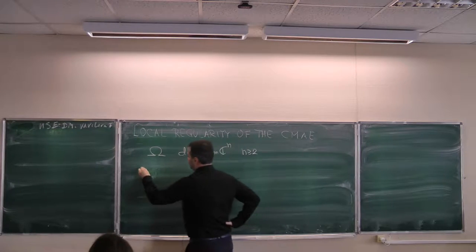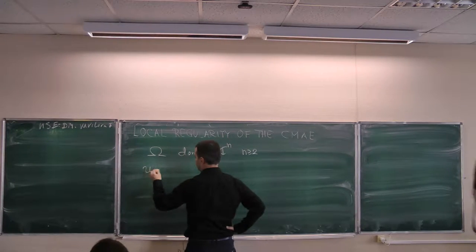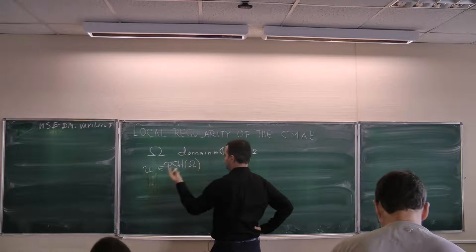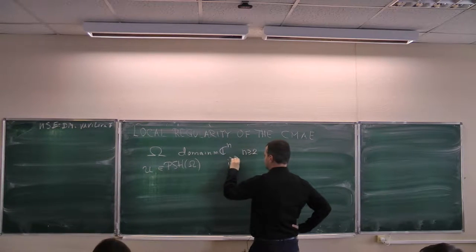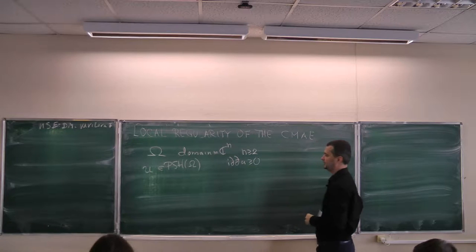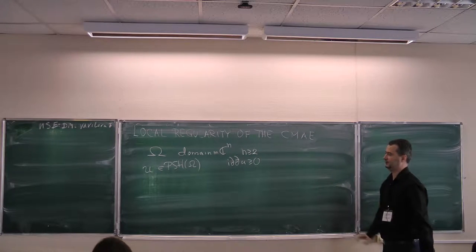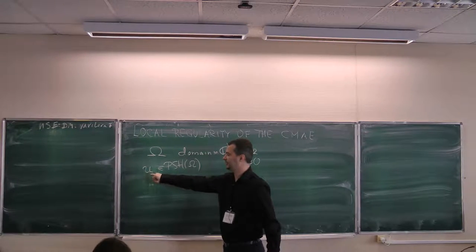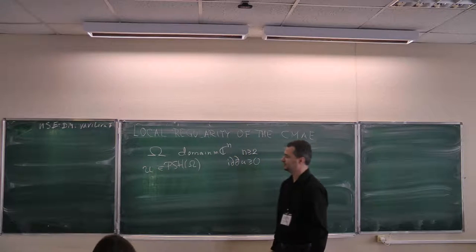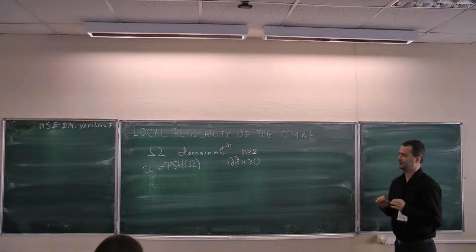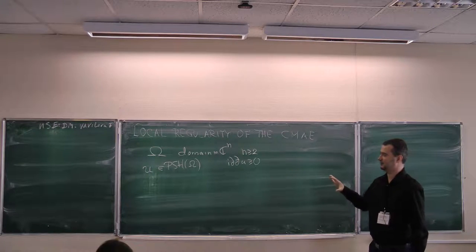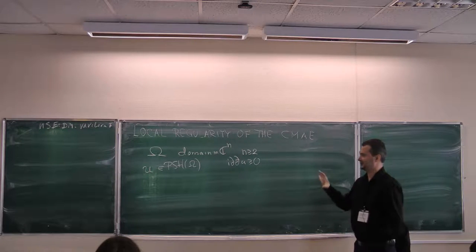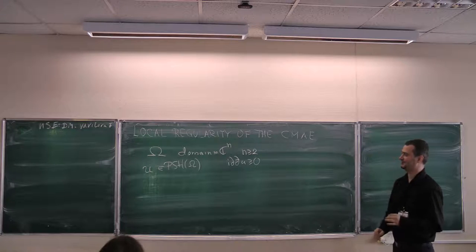The functions u living in omega — I will consider plurisubharmonic functions in omega, which means that i∂∂-bar of u is non-negative as a current, or for smooth functions, that simply means for a C² function that the complex Hessian is non-negative as a matrix pointwise. I have to warn you that a lot of my talk is well known to experts, but the talk is aimed at non-specialists, so I apologize to experts for that.